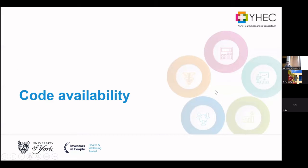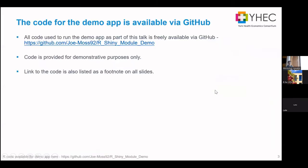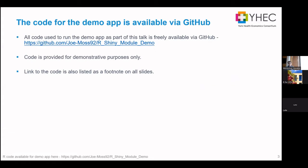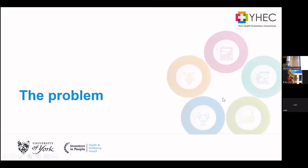Just before we get started, all the code I'll go through today is available via this GitHub link, so those of you online can try and type it in as fast as possible whilst it's on screen. The code will create a toy model — effectively a simple decision tree — that hopefully allows you to see how Shiny modules can be implemented in a larger app.